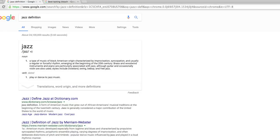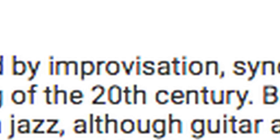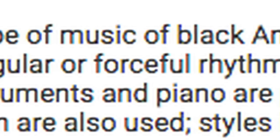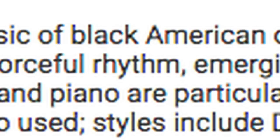Jazz is a type of music which everyone has heard of, but no one really knows how to define. Google says jazz is characterized by improvisation, syncopation, and regular or forceful rhythms — whatever that's supposed to mean. Basically, jazz is music without a lot of rules. With that said, it's time to go over the rules of jazz.